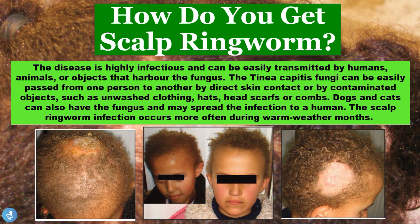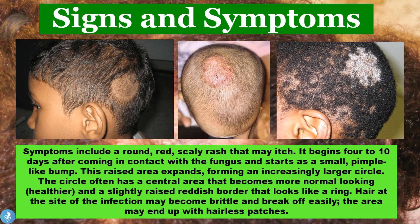Moving on, let's explore some signs and symptoms. The symptoms include a round, red and scaly rash that may be very itchy. The rash usually begins 4 to 10 days after contact with the fungus and starts as a small pimple-like bump. This raised area expands forming an increasingly larger circle, often with a central area that looks more normal and a slightly raised reddish border that looks like a ring. The hair at the site of infection may become brittle and break off easily, resulting in hairless patches.